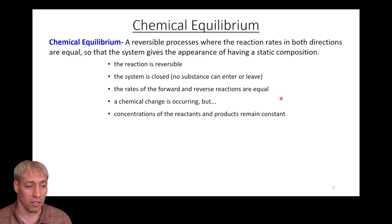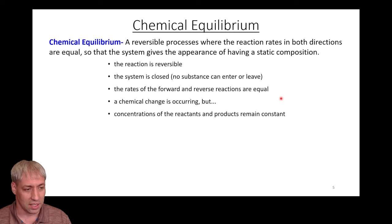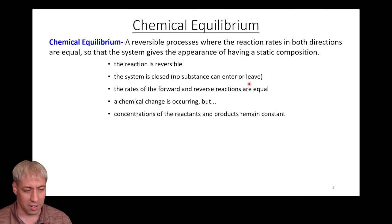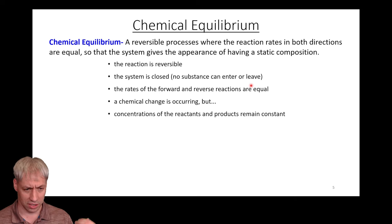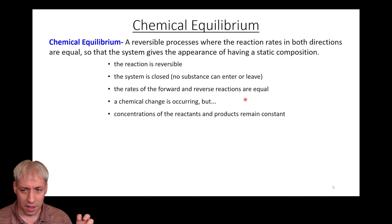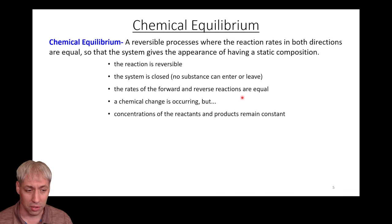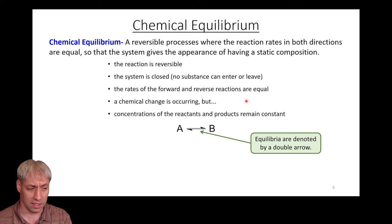Breaking this down further: the reaction is reversible — it can go one way or the other, though not necessarily equally favorable in both directions. The system must be closed; if matter is leaving the system, it can never reach equilibrium. But if it is a closed system and the reaction is reversible, at some point the rate of forward and reverse reactions will become equal. On a molecular level, chemical change is occurring — A is turning to B, B is turning to A — but on average, the concentration of reactants and products remains constant.